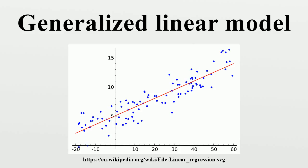Model components. The GLM consists of three elements: 1. A probability distribution from the exponential family. 2. A linear predictor eta equals x beta. 3. A link function g such that e equals mu equals g inverse.